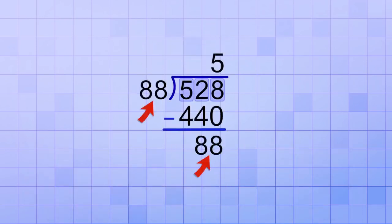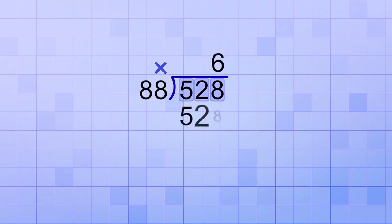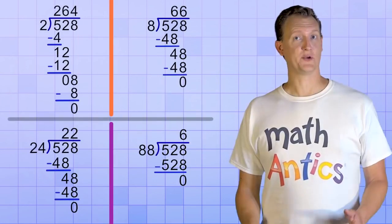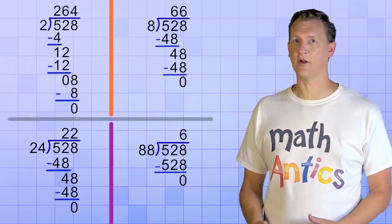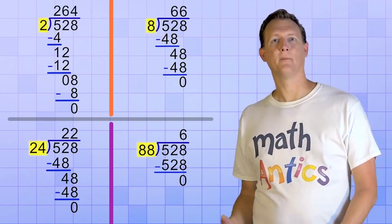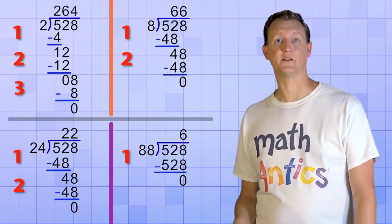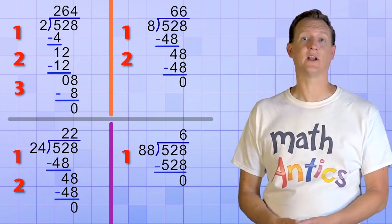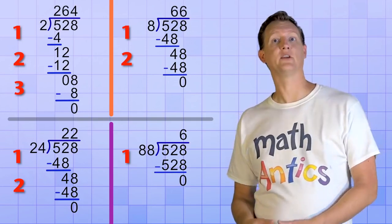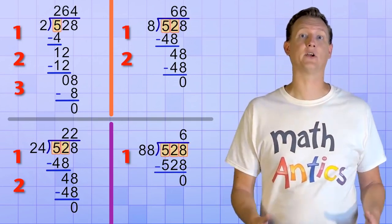So we should have picked 6. And if you multiply 6 times 88, you'll see that it's 528. So as you can see, even though the division procedure is basically the same in all these cases, the value of the divisor makes a big difference on our division steps. Whenever the divisor is bigger than the part of the dividend that we're trying to divide, it means that we need to group more digits and take bigger division steps.